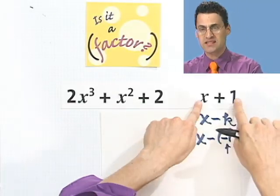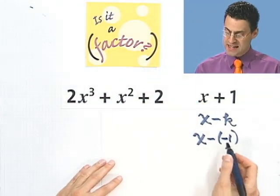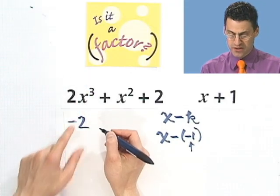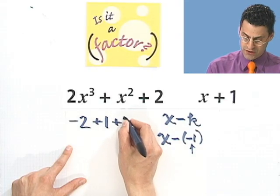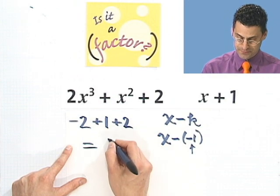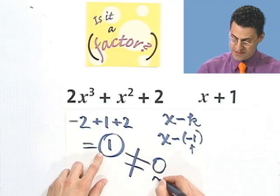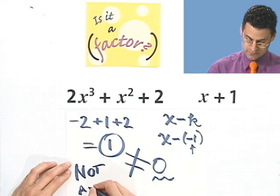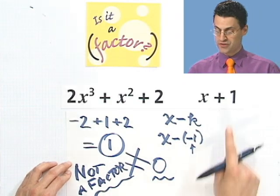All I've got to do is take minus 1 and plug it in for x and ask, is that 0? If it equals 0, this is a factor. If it doesn't equal 0, this is not a factor. So let's see what happens if I plug in negative 1 into here. I would see a negative 2 because negative 1 cubed is negative 1. And then I would see a plus 1 and a plus 2. And that negative 2 plus 1 is negative 1 plus 2 is 1. So in fact, this equals 1, which is not equal to 0. That's the only question you ask. And therefore, not a factor. So this is not a factor.